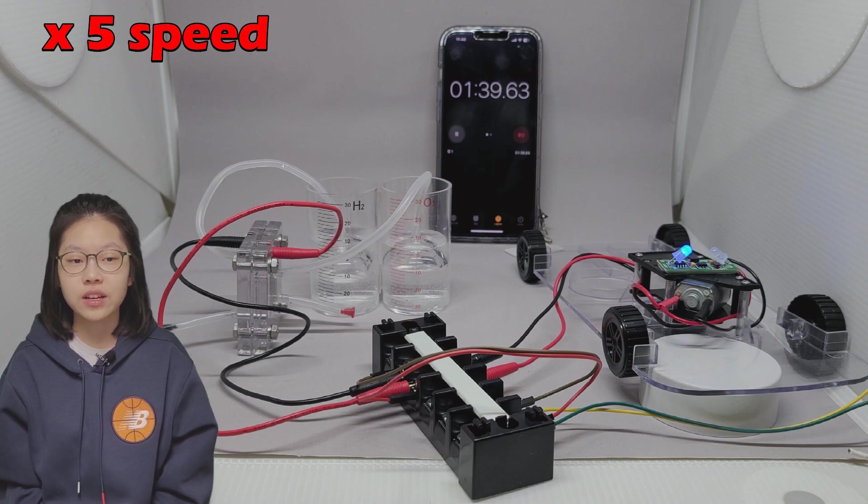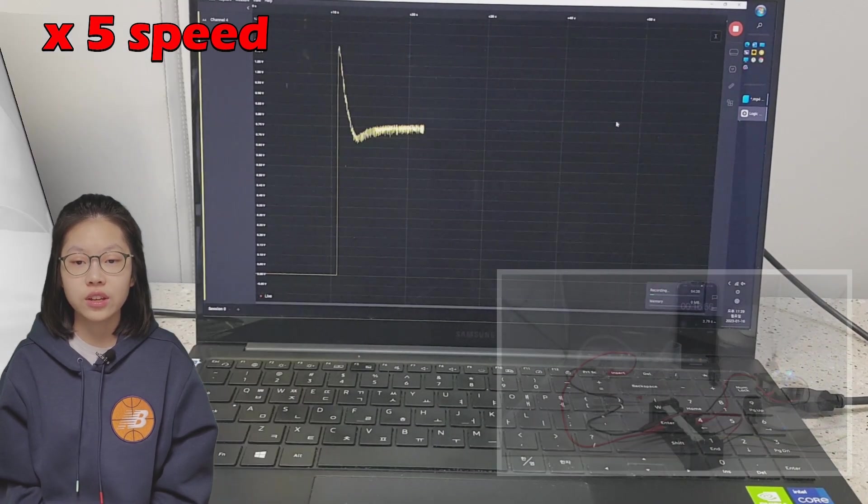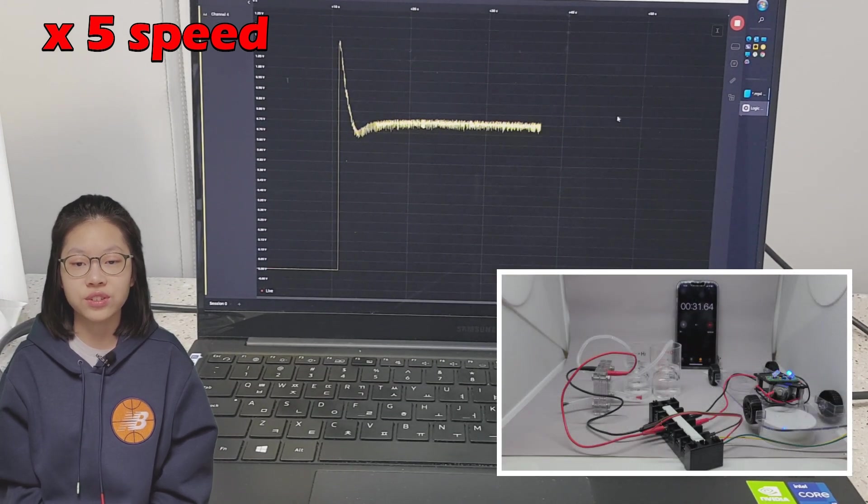However, at this time, you can see a lot of hydrogen and oxygen in the tanks. You can see this more accurately by looking at the voltage graph.